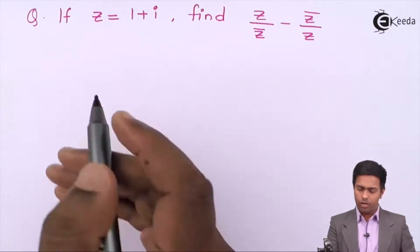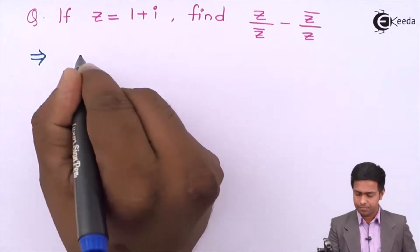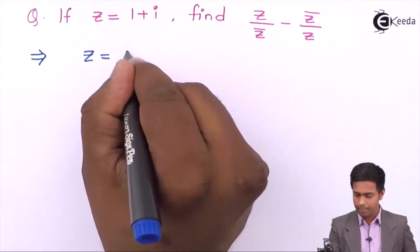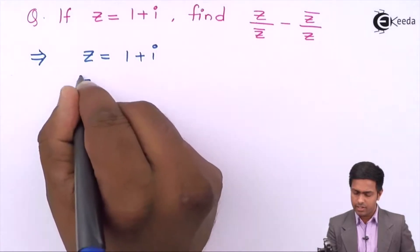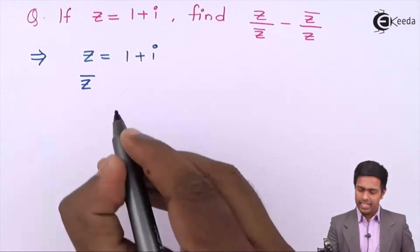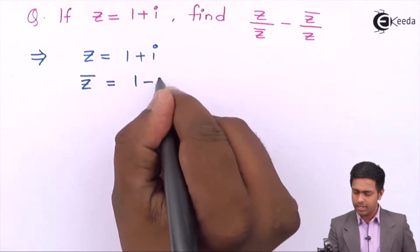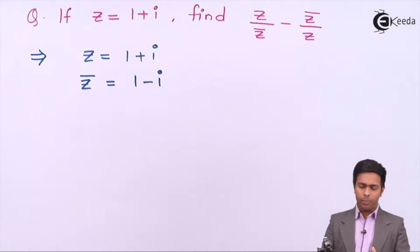First of all we will write down the given values. Here z is given as 1 plus i. Z bar, which is the conjugate or complex conjugate, is nothing but 1 minus i. Now as we got both the values, now we will put these values in the question to get the answer.